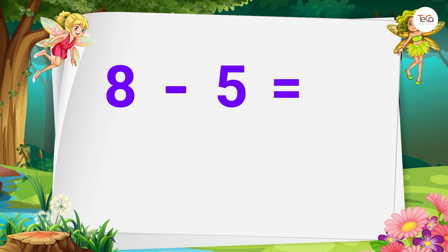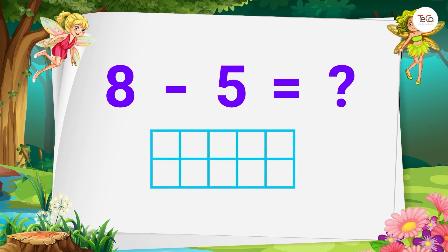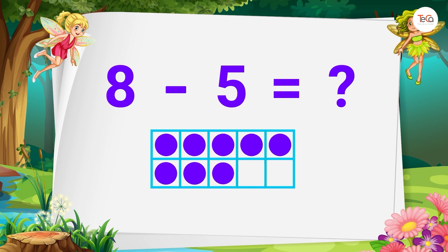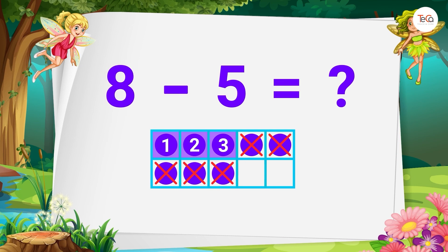Next, 8 minus 5 equals... Draw 8 dots, then cross out 5 dots. Here we have 3 dots left. So 8 minus 5 equals 3.